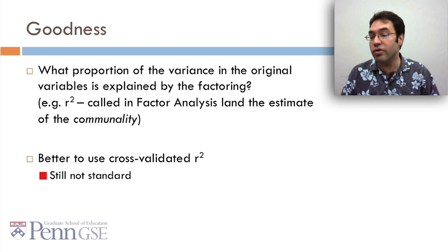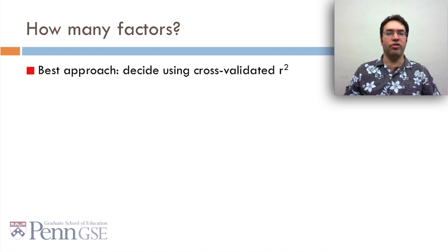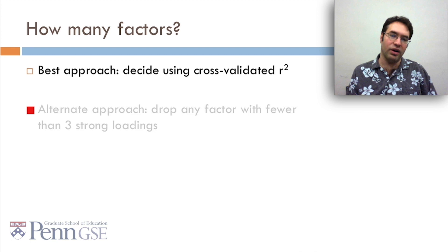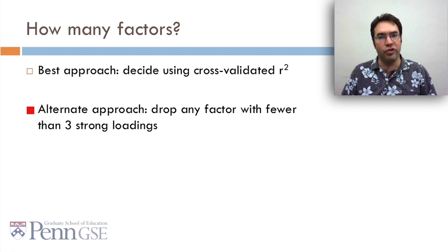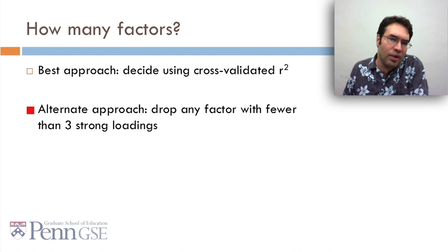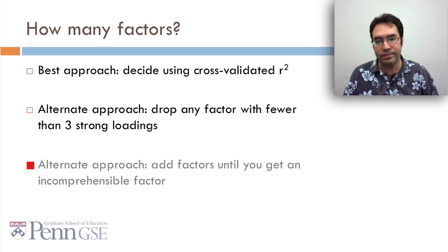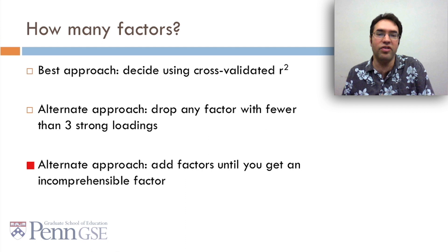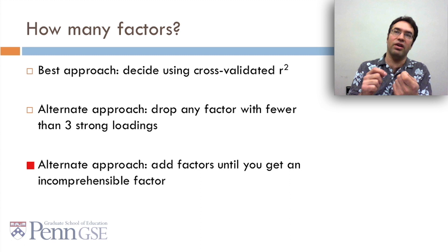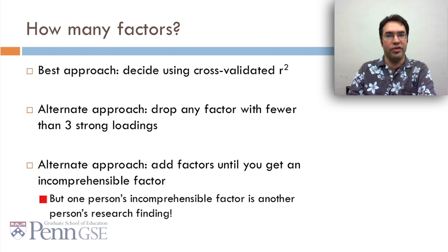So how many factors should you use? Well, the best approach, in my personal opinion, is to decide using cross-validated r-squared. But there's an alternate approach that some people use, which is where they drop any factor that has fewer than three strong loadings. Now this makes sense if you're doing questionnaires. Who wants a questionnaire with a subscale with two items on it? It doesn't really make sense and it doesn't give you enough data. But for other uses of factor analysis, this may make more sense. You may want factors that are outlier factors in various ways. An alternate approach is you could add factors until you get an incomprehensible factor. This is actually fairly common and fairly popular in the statistics community. You just keep going with more factors until you get a factor that you say, I have no idea what that means. Now, the only concern I have about this, and my only caution, I'm a data miner, is one person's incomprehensible factor is another person's research finding. So if you're going to throw things out just because you don't understand them, really make sure that it's really junk and not just that you don't understand it.